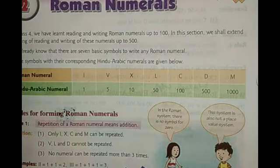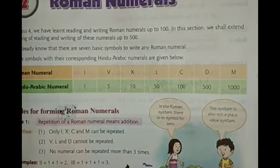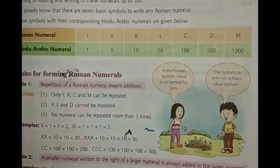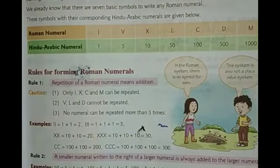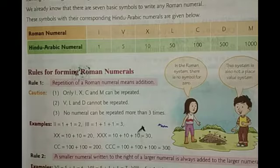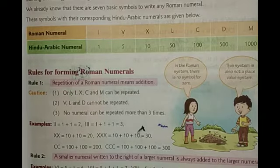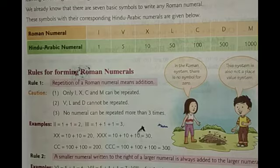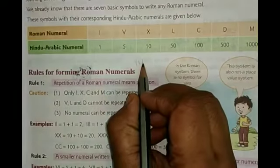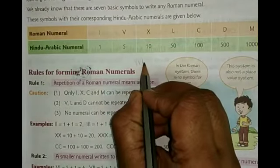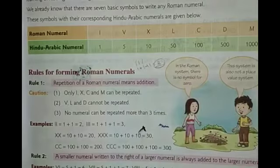Now what are the rules for forming Roman Numerals? Rule number 1: repetition of Roman Numerals means addition. If a Roman Numeral is repeated, it means addition. For example, writing I three times — I, I, I — means 1 plus 1 plus 1 equal to 3. So if we write I three times, it means addition.